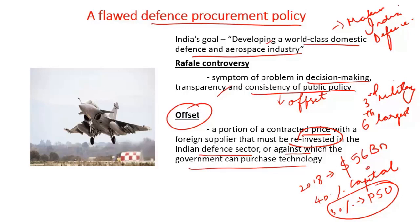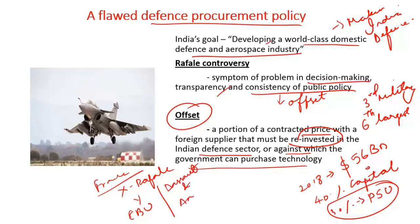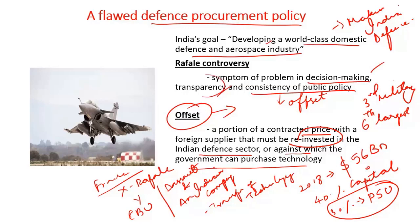For example, India signed an agreement with France to purchase a certain number of Rafale aircraft. Of them, Dassault would supply some as completely built units, and the remaining aircraft would be manufactured by Dassault Systems and an Indian company in India. This ensures transfer of technology to the Indian company, and the spillover effect of this partnership would improve India's defense manufacturing acumen. However, problems in decision-making, lack of transparency, and inconsistency of public policy have created problems for this noble initiative.